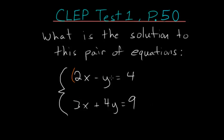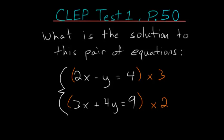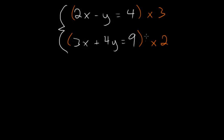So if we multiply the top equation on both sides by 3 and the bottom equation on both sides by 2, then the coefficient on x will be the same in each equation.